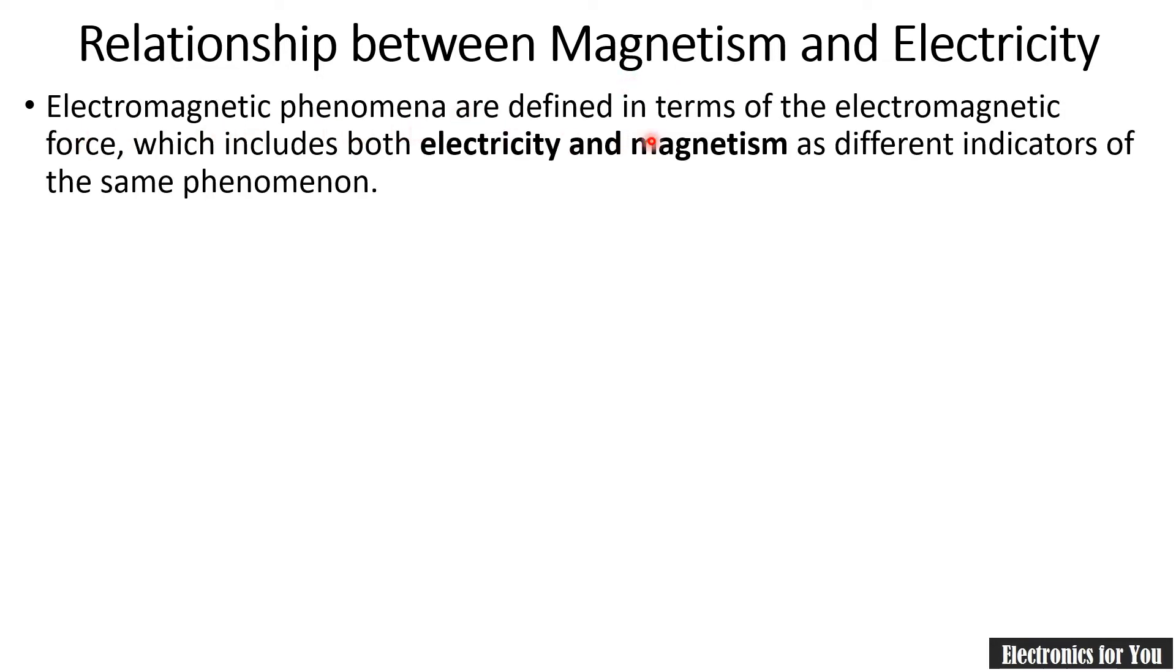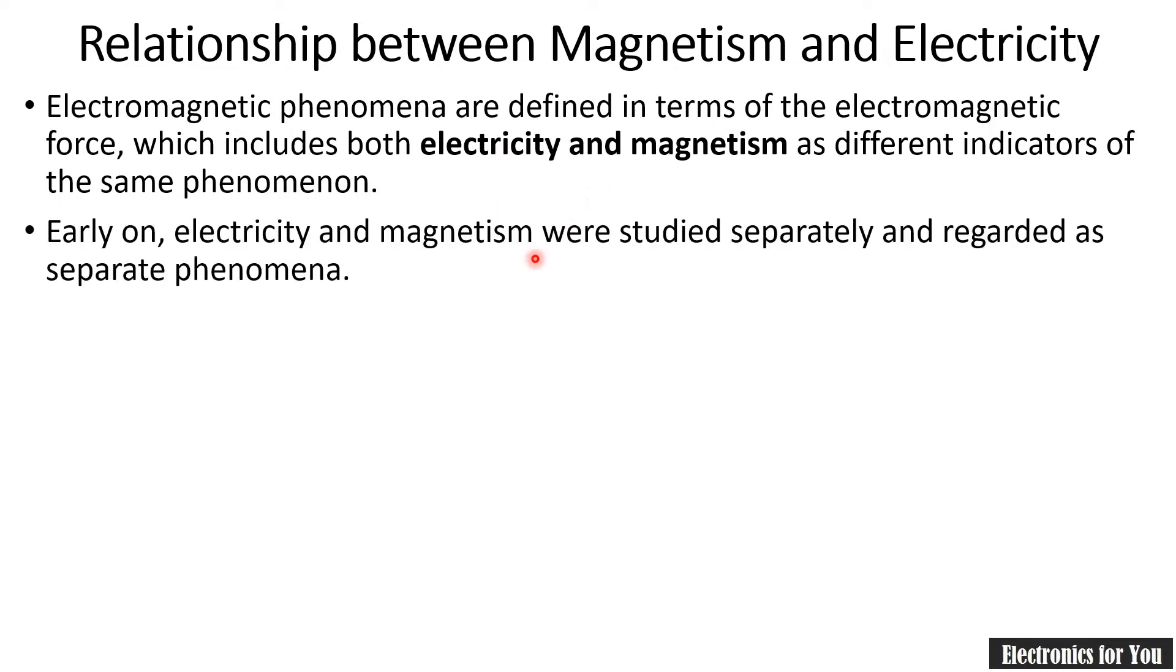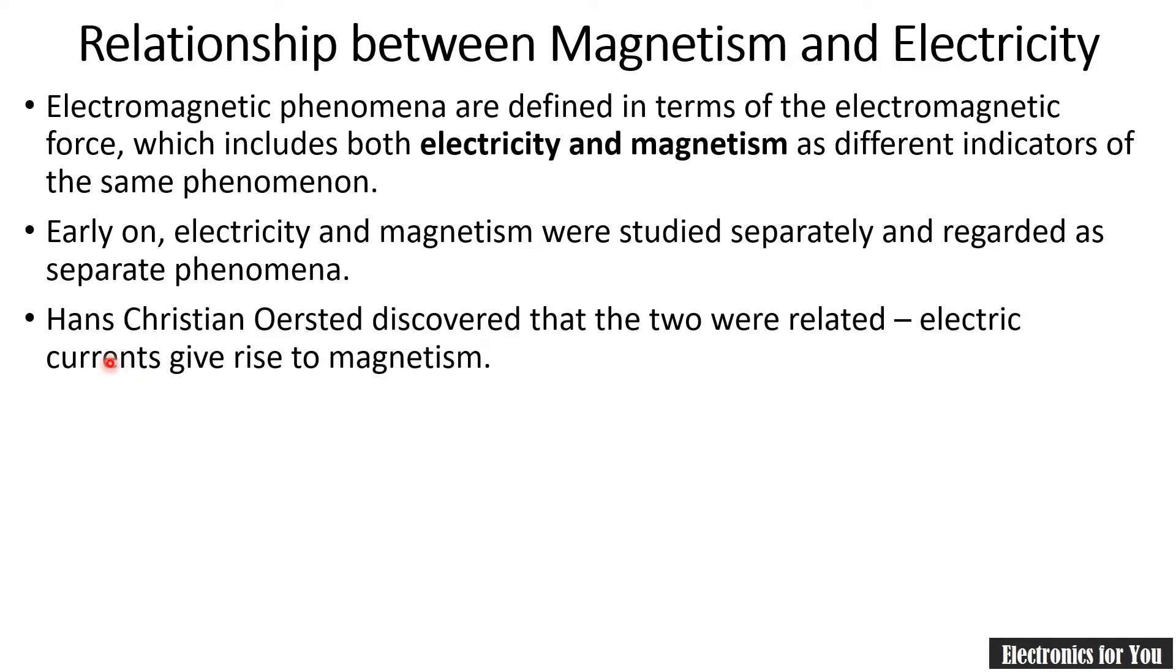Electromagnetic phenomena is defined in terms of electromagnetic force which includes both electricity and magnetism. That's why the word electromagnetism is there. Basically, earlier they were considered as two different phenomena. But now, Hans Orsted discovered that these two were related and therefore, nowadays electricity and magnetism are considered to be same phenomena.